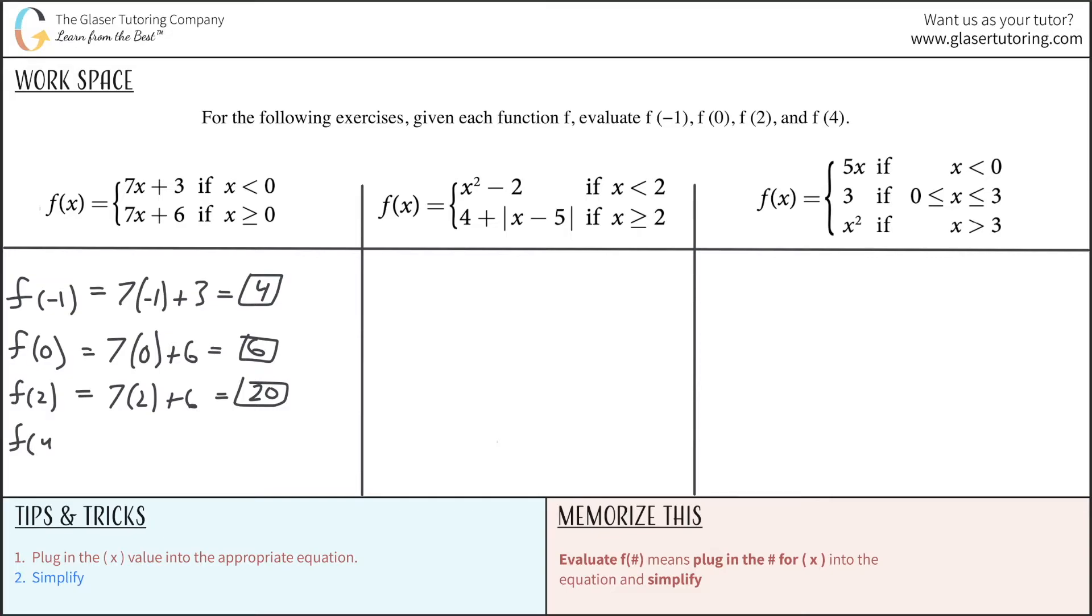And now lo and behold, we do the last one, f of 4. Again, same equation. So it's going to be 7 times 4 plus 6. 7 times 4 is going to be 28, add 6 to it, so that's 34.